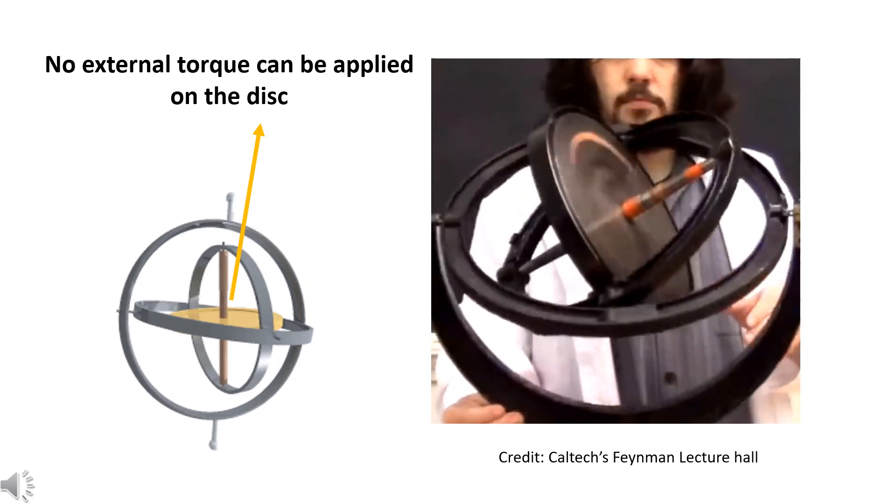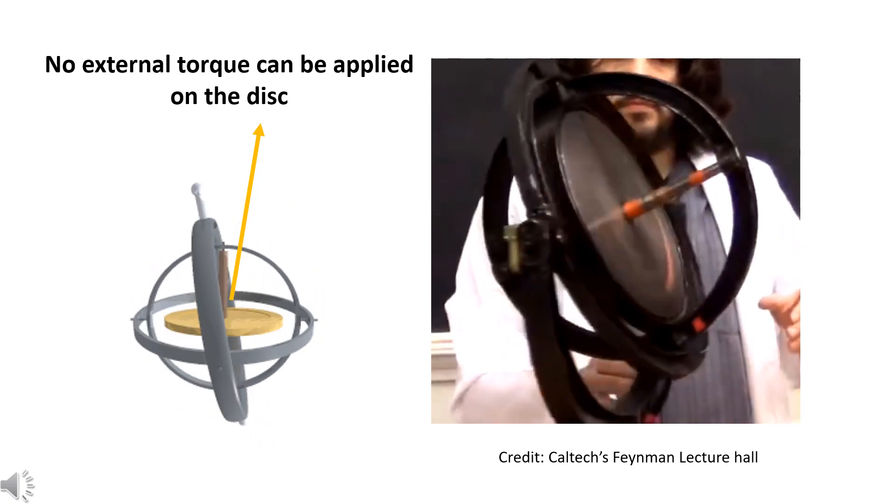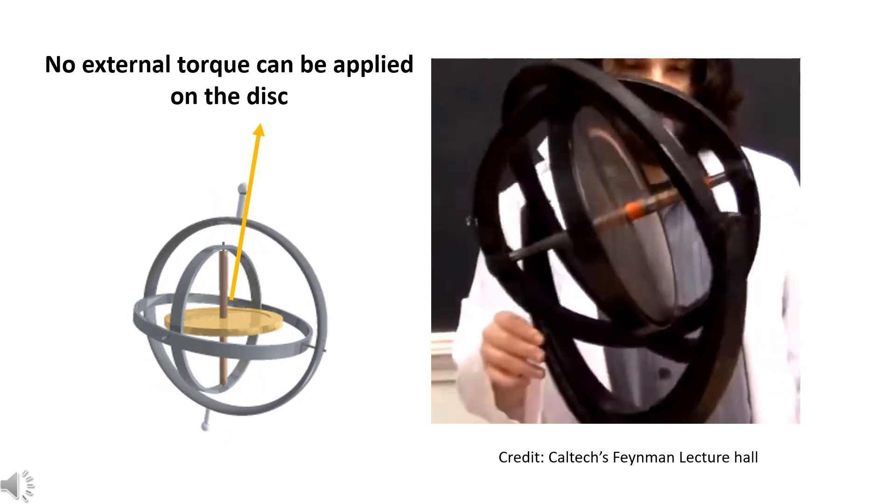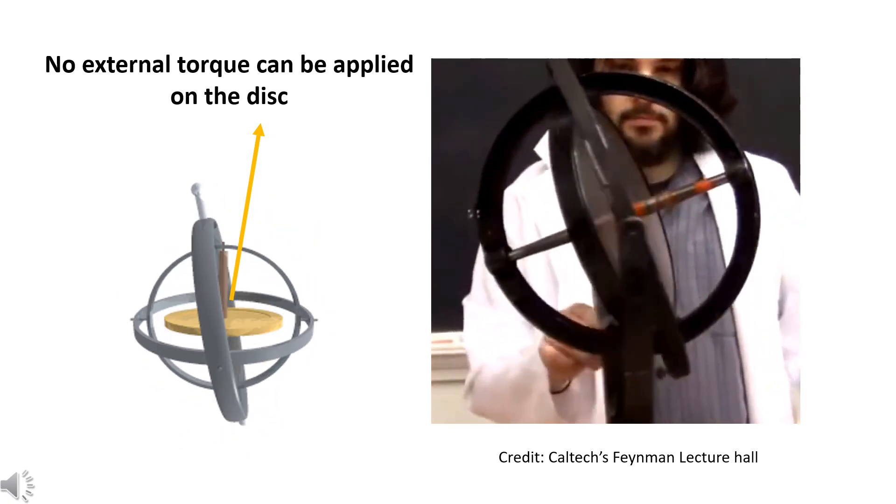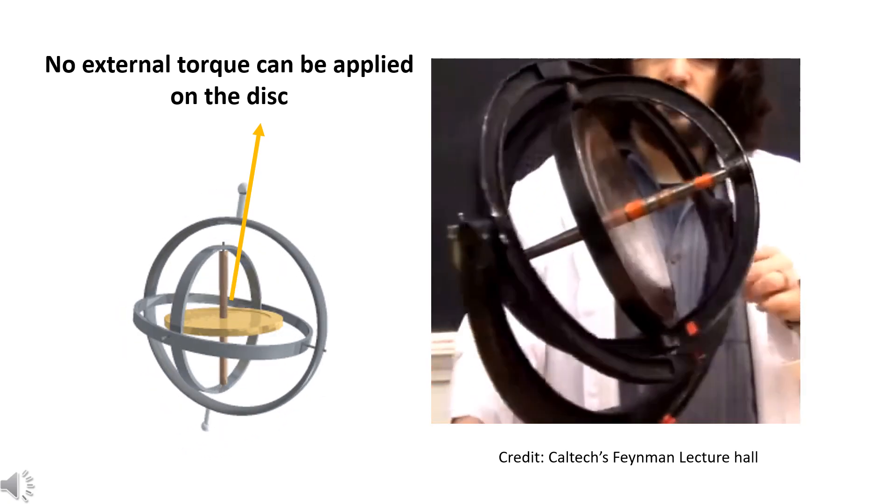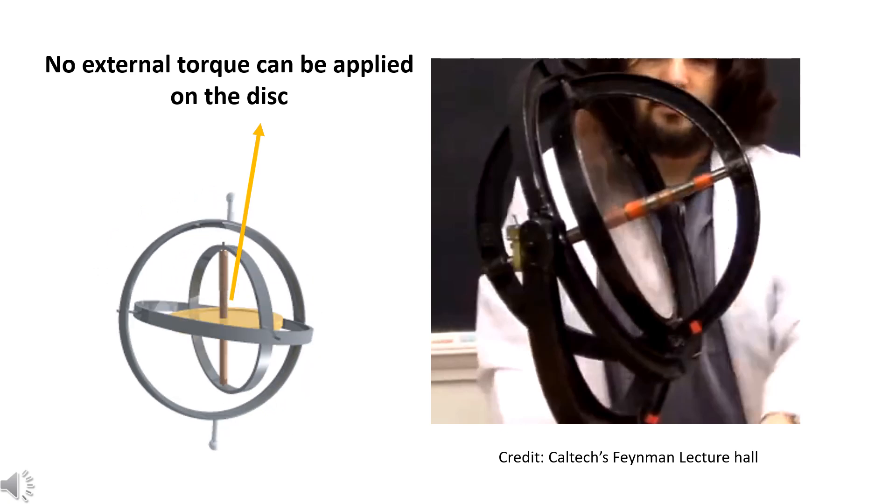it will have the angular momentum pointing in a particular direction. Since no external torque can be applied on the disc, angular momentum and the axis of the spinning disc always point in the same direction even when the external gimbals move and rotate. Thus, this axis acts as a reference and helps in guidance.